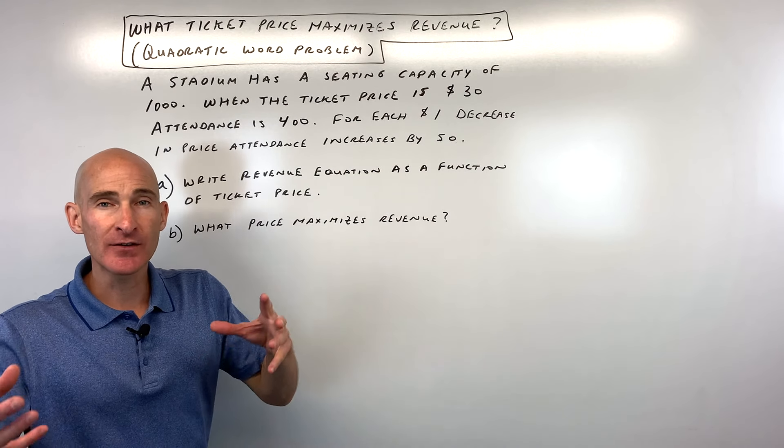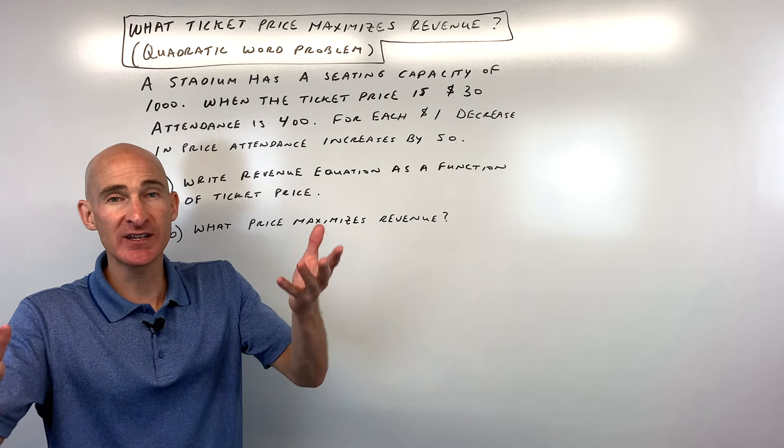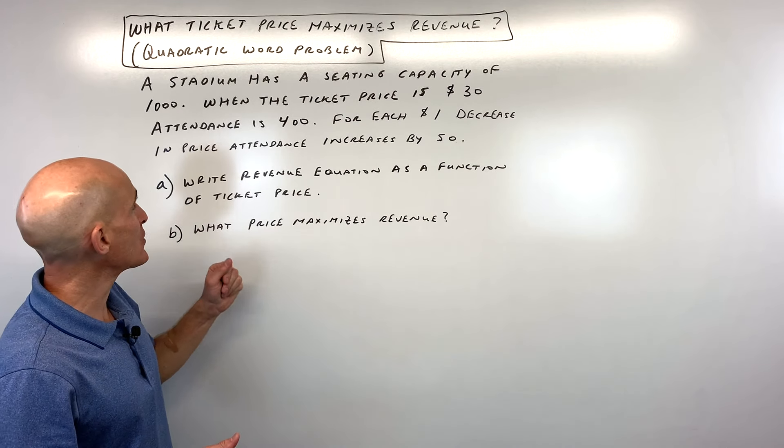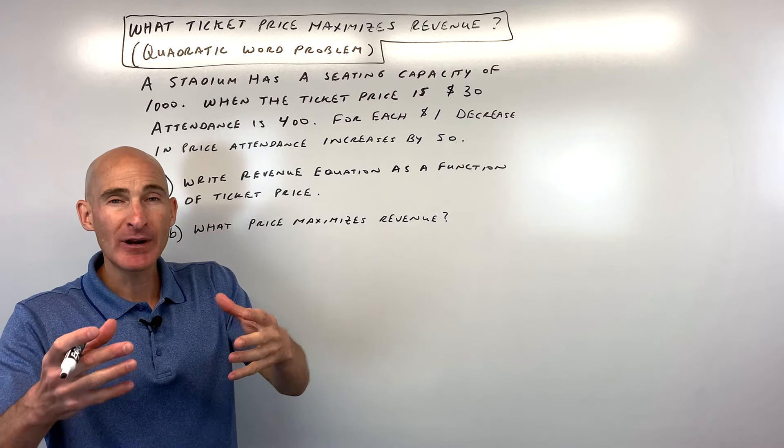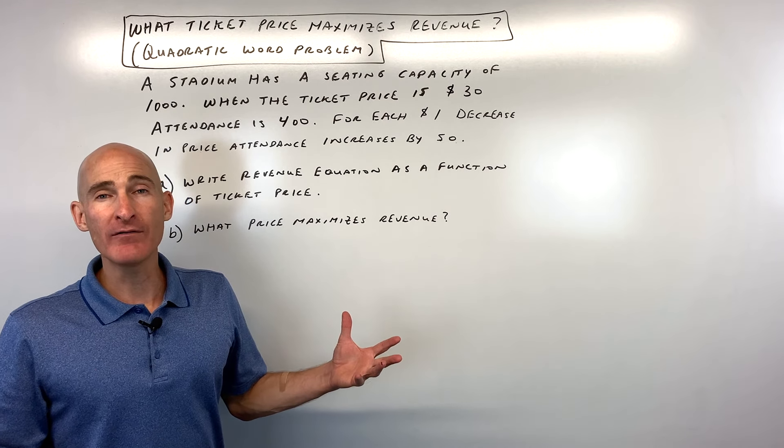So it kind of makes sense like if you lower the price then people say oh that's a good price, maybe I'm going to go and so the attendance goes up. But what we're trying to figure out is how many of these price decreases do you have to do to maximize the overall revenue.